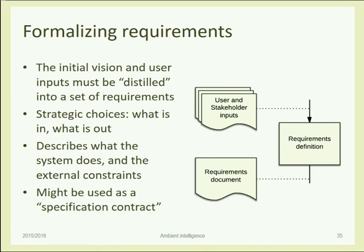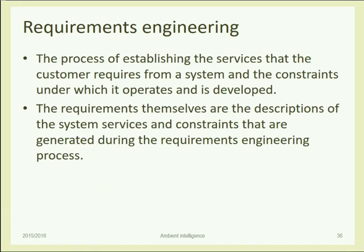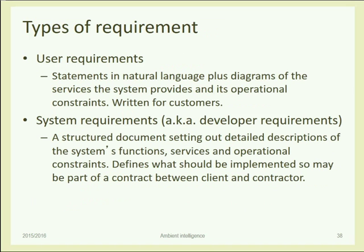The sentence we will repeat many times is: we need to decide what is in and what is out of the system — what should be implemented and what should not be implemented, and how. We'll try to keep the 'what' and the 'how' separated, because we need to describe them in different ways. Let's analyze more formally what kind of information we need to write in this requirements document.